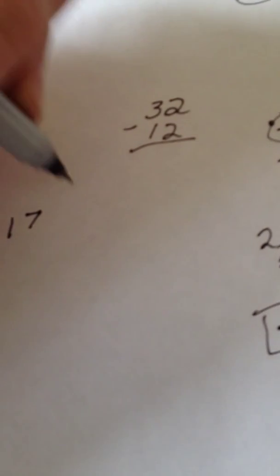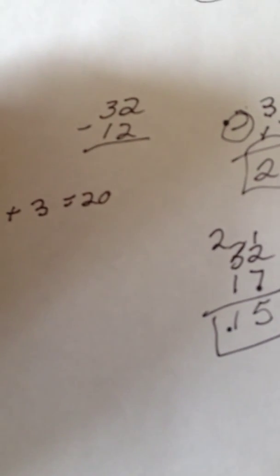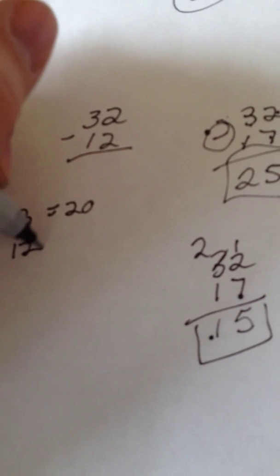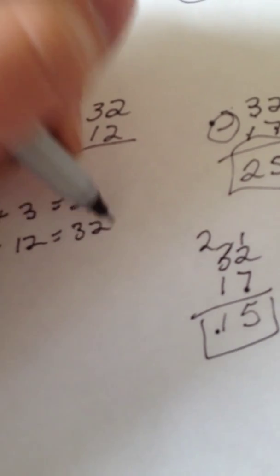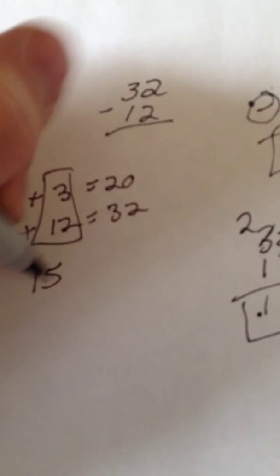If you were to do it the new math way, you take 17, you add 3, you get to 20, you're at 20, you add 12, you get to 32, 3 plus 12, 15.